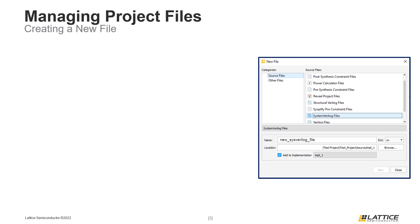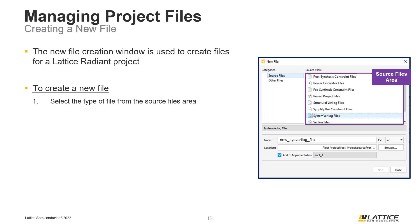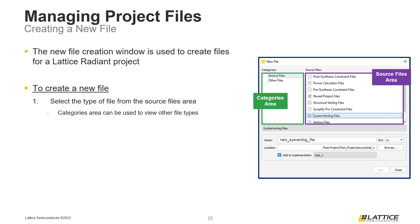If a new file is added to a project, the new file creation window will appear. This window can be used to create various types of files for a Radiant project. To begin creating a new file, select the type of file you want to create in the source files area. If the type of file you want to create is not in the source files area, select a different category from the categories area. This will update the source files area with different types of files that can be created. Once a file type has been selected, the next step is to define a name and location for the new file.